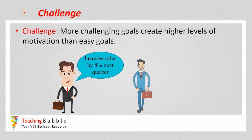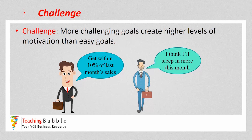For example, 'increase sales by 8% in the next quarter' may be a challenging goal for a particular individual, whereas 'get within 10% of last month's sales' may be too easy, so the employee isn't really motivated towards achieving that. One of the difficulties with this attribute is finding a challenging goal for each individual employee, because every employee is different — one may find a goal challenging while another finds it easy, making it very difficult to find the right balance.